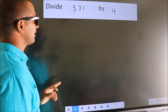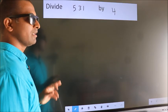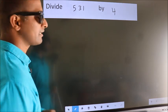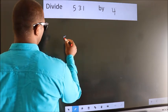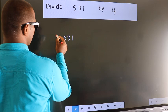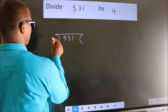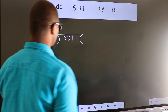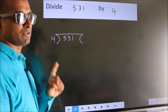Divide 531 by 4. To do this division, we should frame it in this way. 531 here, 4 here. This is your step 1.